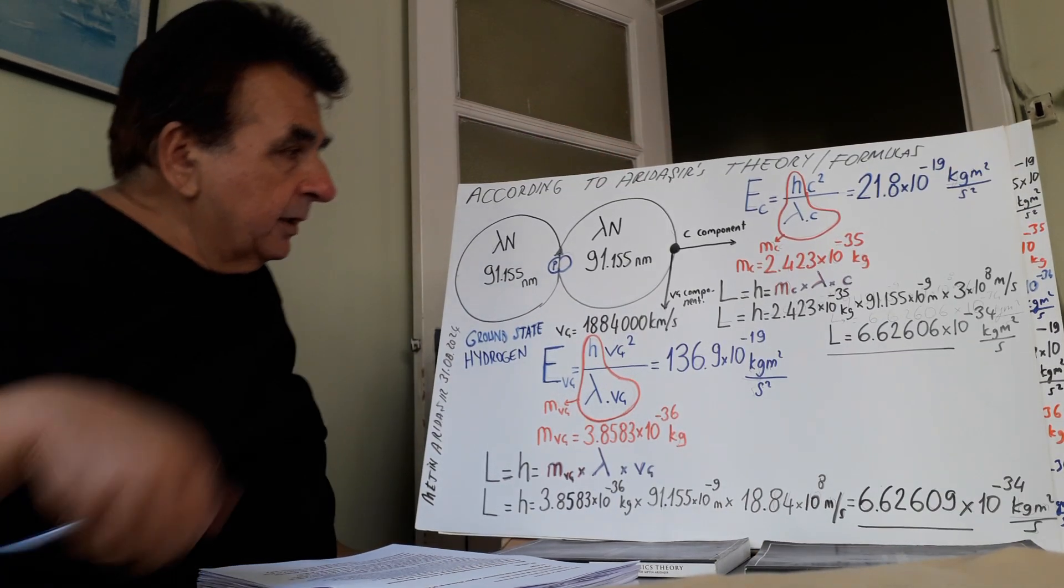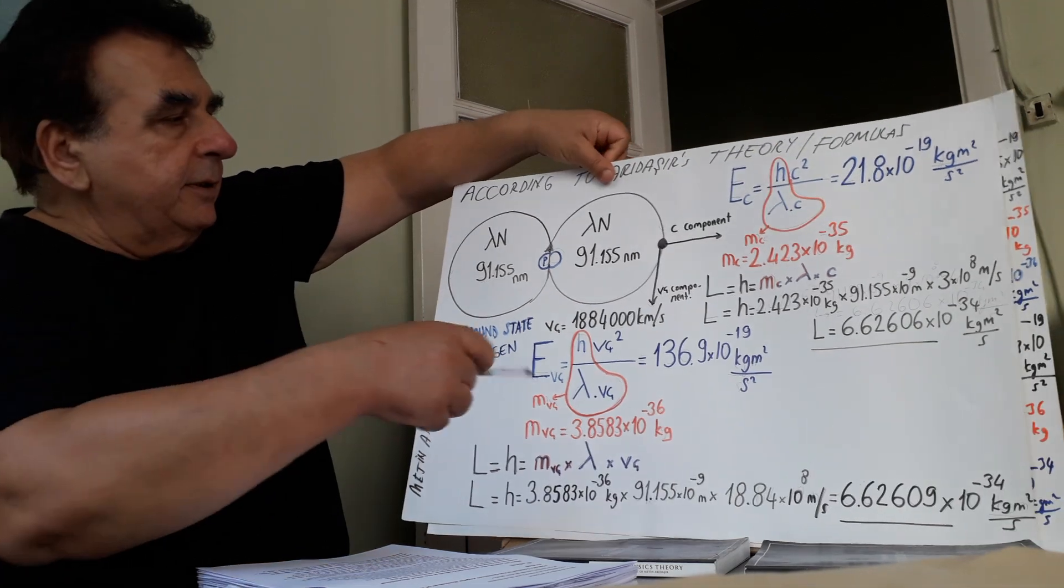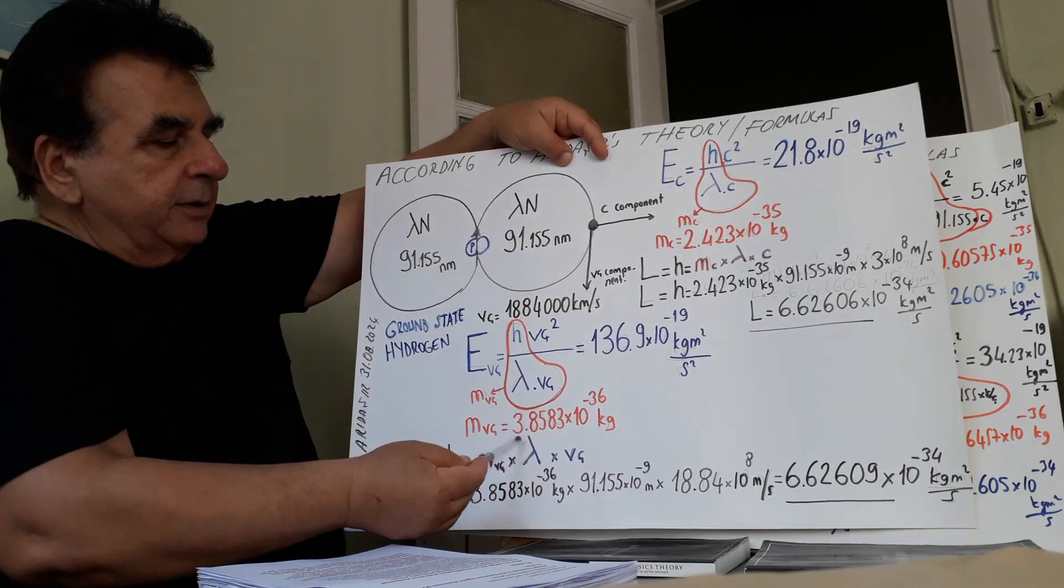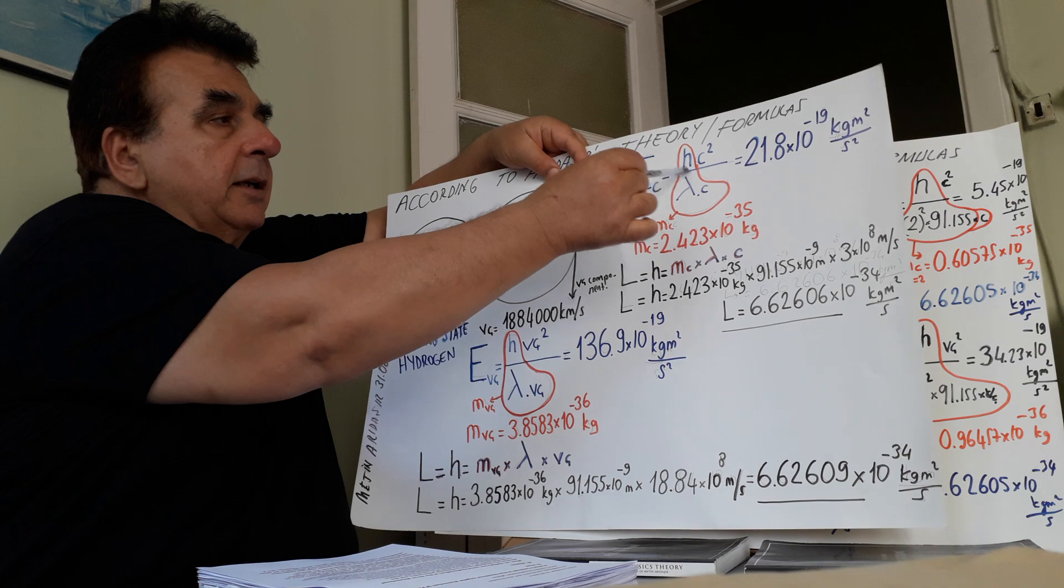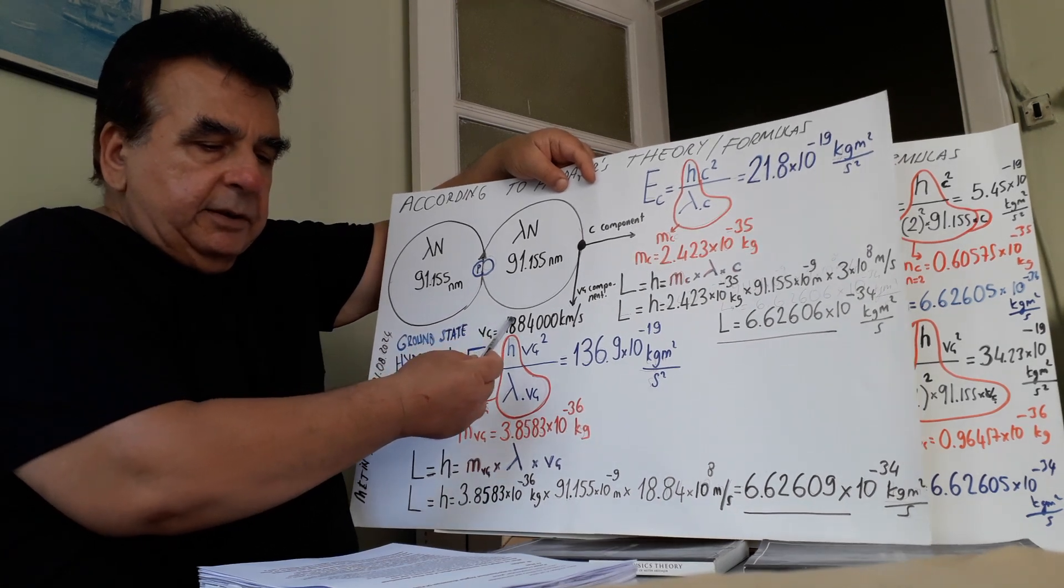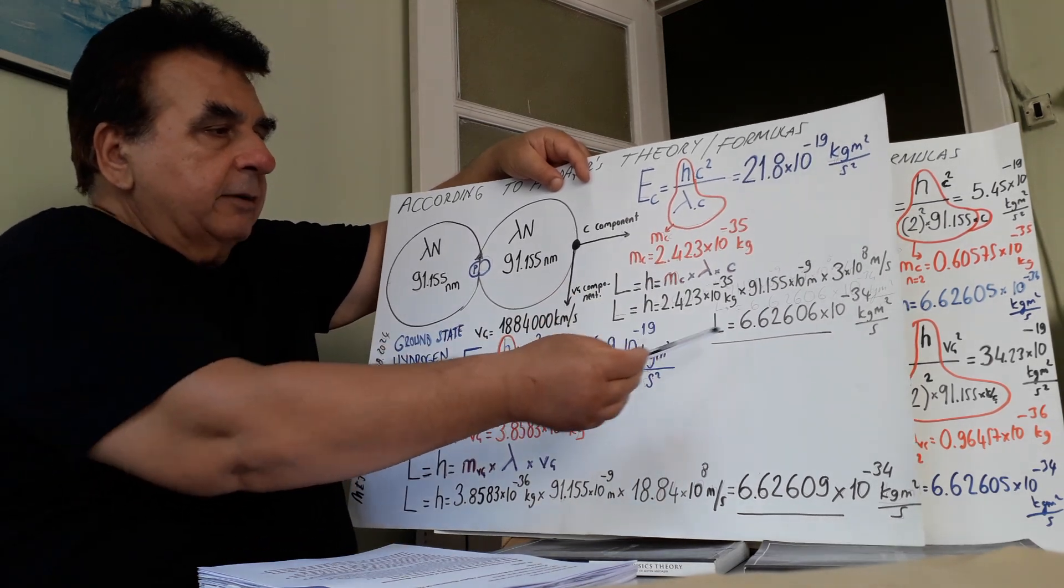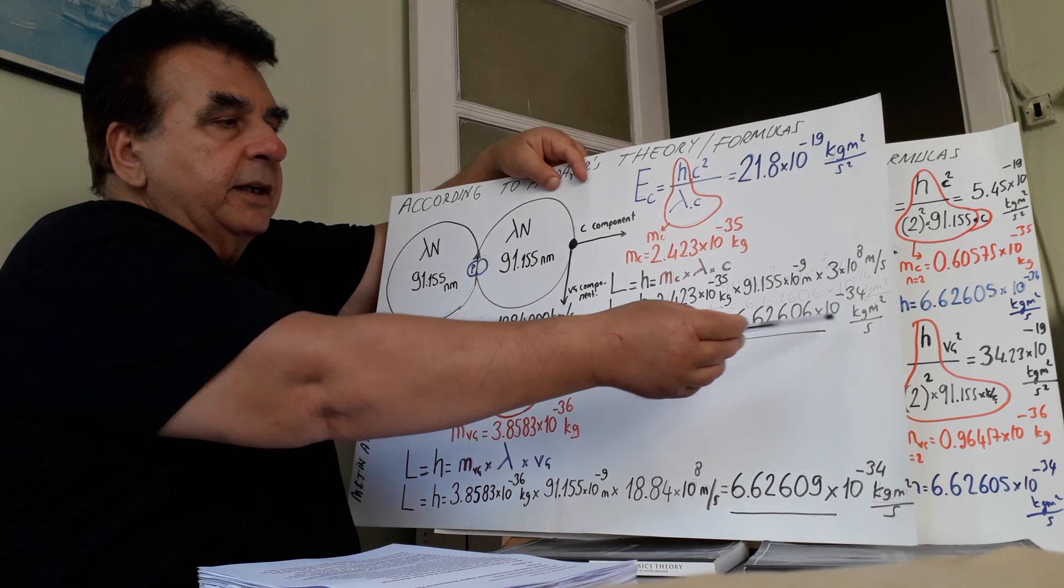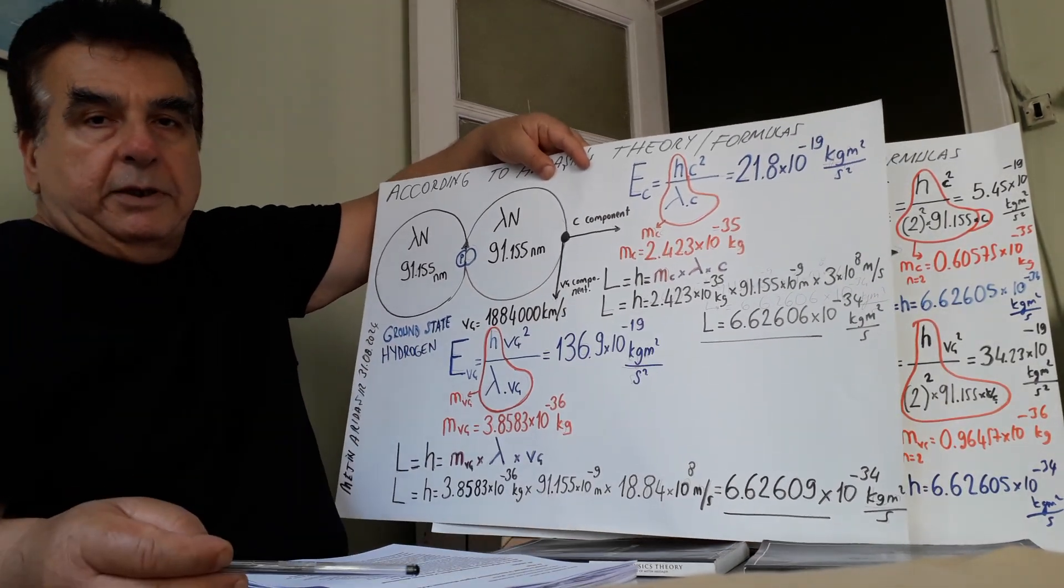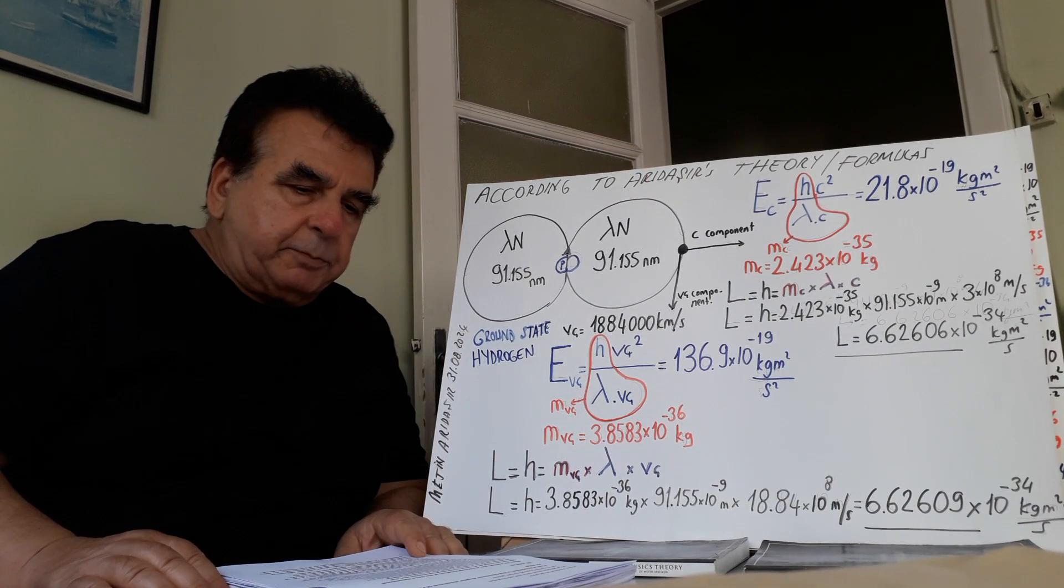When we multiply the wavelength of electron, its C component, C component point mass, here this is formula, this is tangential velocity component mass, this is speed of light. When we multiply the wavelength of electron, its speed of light component point mass, and the speed of light, we find again 6.626 times 10 to the minus 34 kilogram meters per second. In other words, Planck's constant again.